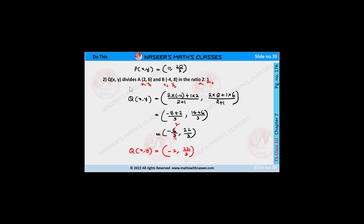Next, Q(X, Y) divides A(2, 6) and B(-4, 8) in the ratio 2:1. Here M1 = 2, M2 = 1, (X1, Y1) = (2, 6), and (X2, Y2) = (-4, 8). Substituting in the section formula: X = (2×(-4) + 1×2) / (2+1), Y = (2×8 + 1×6) / (2+1).